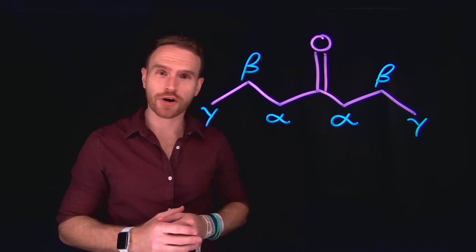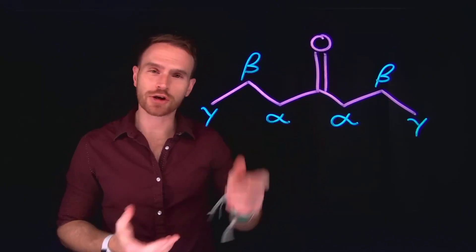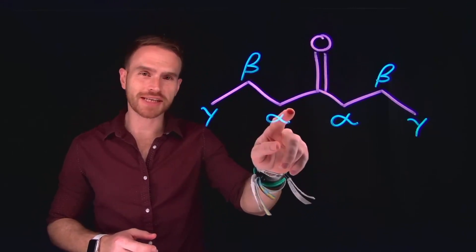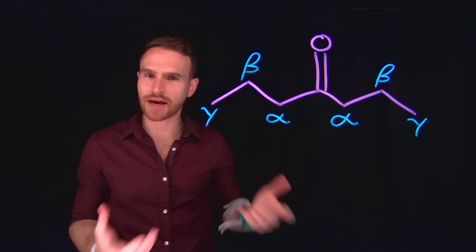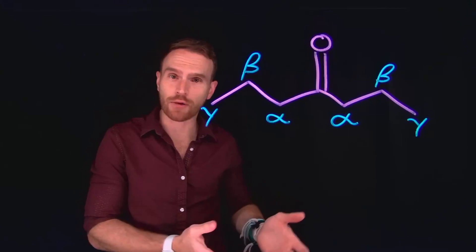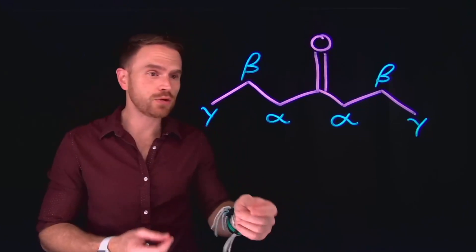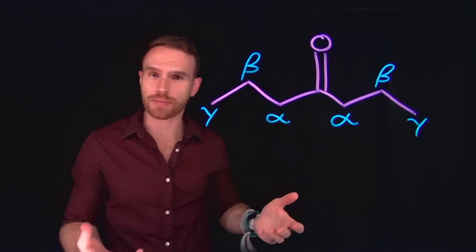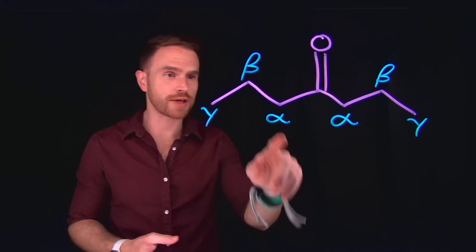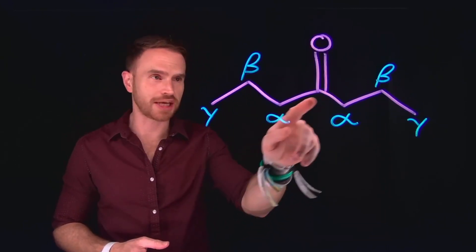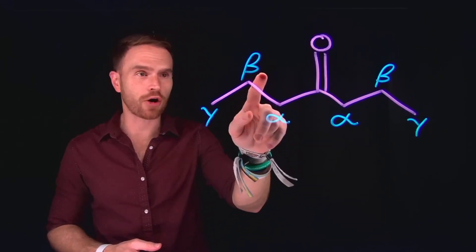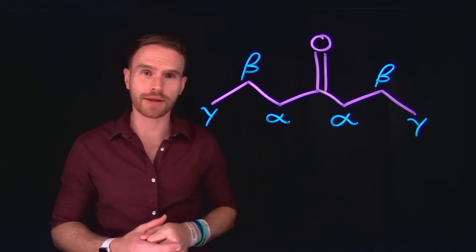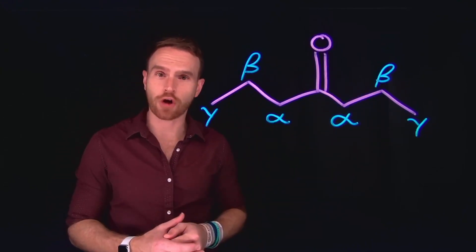First, let's learn what an alpha carbon is. When you have a carbonyl functional group in any molecule, the directly adjacent carbon on either side of that carbonyl group is what's called the alpha carbon. We use the Greek alphabet to label how many carbons away from that carbonyl group you are. So the alpha carbon is the first carbon adjacent to the carbonyl group, the beta carbon is the second carbon atom, and the gamma carbon is the third carbon away from the carbonyl group.